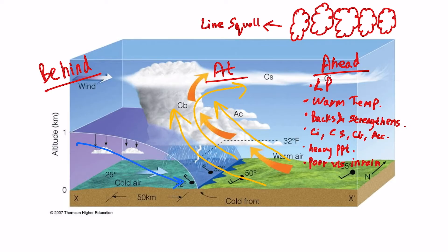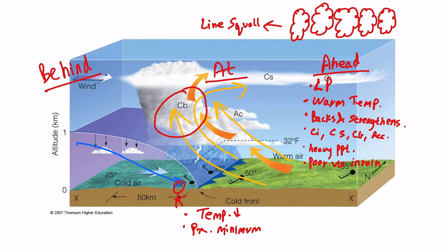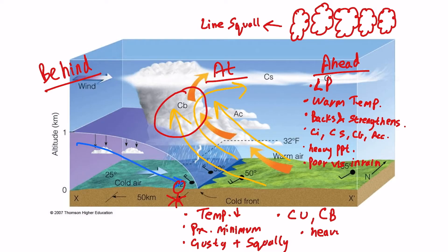At a cold front, when it is passing right above us, the temperature starts to fall because the cold air is arriving. The pressure is at its minimum here because we are right under a cumulonimbus cloud, which is a low pressure area. The winds will be gusty and squally. The clouds are either cumulus or cumulonimbus, which give heavy showers and poor visibility.